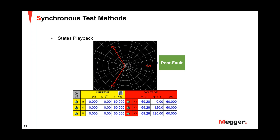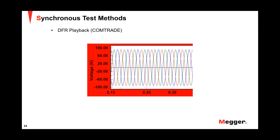A second test method is COMTRADE or DFR playback. COMTRADE stands for Common Format for Transient Data Exchange for power systems — a file format that stores oscillography and data related to power system disturbances. COMTRADE files can be obtained from the relay's event recorder and played back onto the relay using test equipment. These files can also be produced by fault simulation software, where you model the power system, simulate certain faults, and download the resulting COMTRADE files.